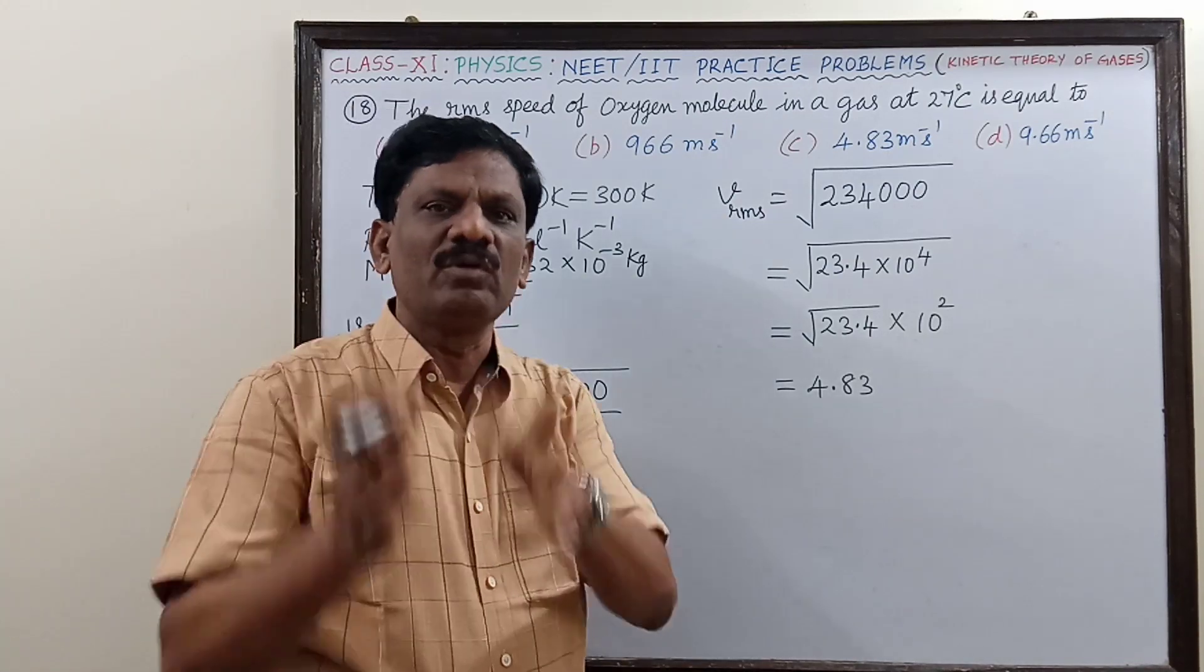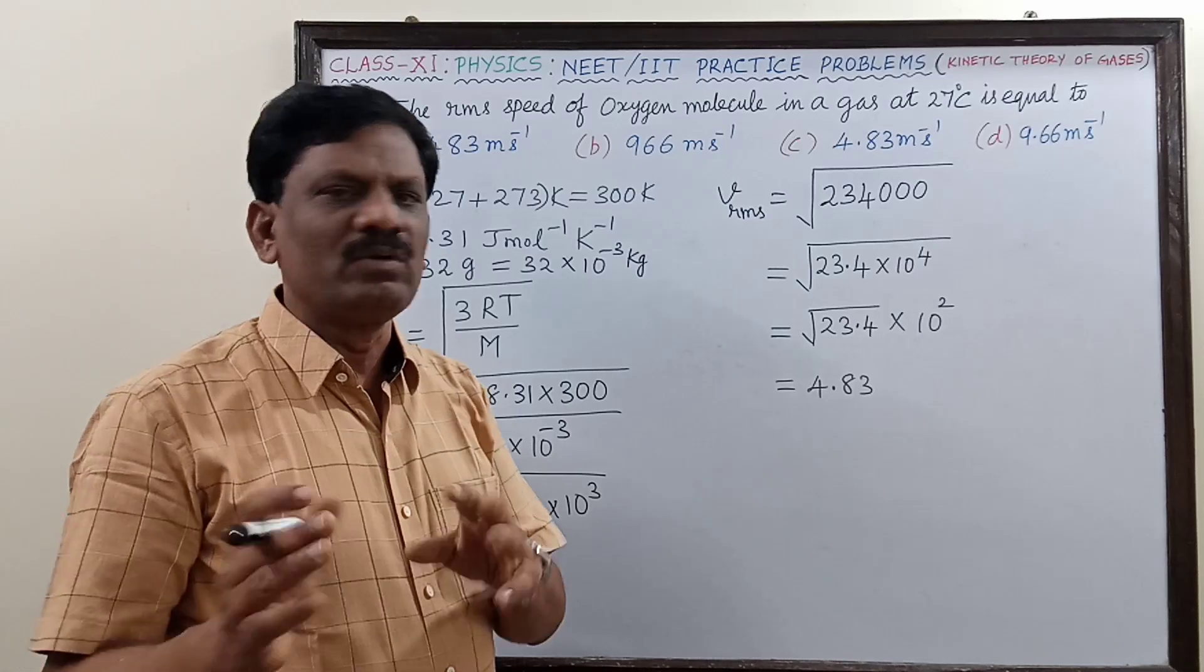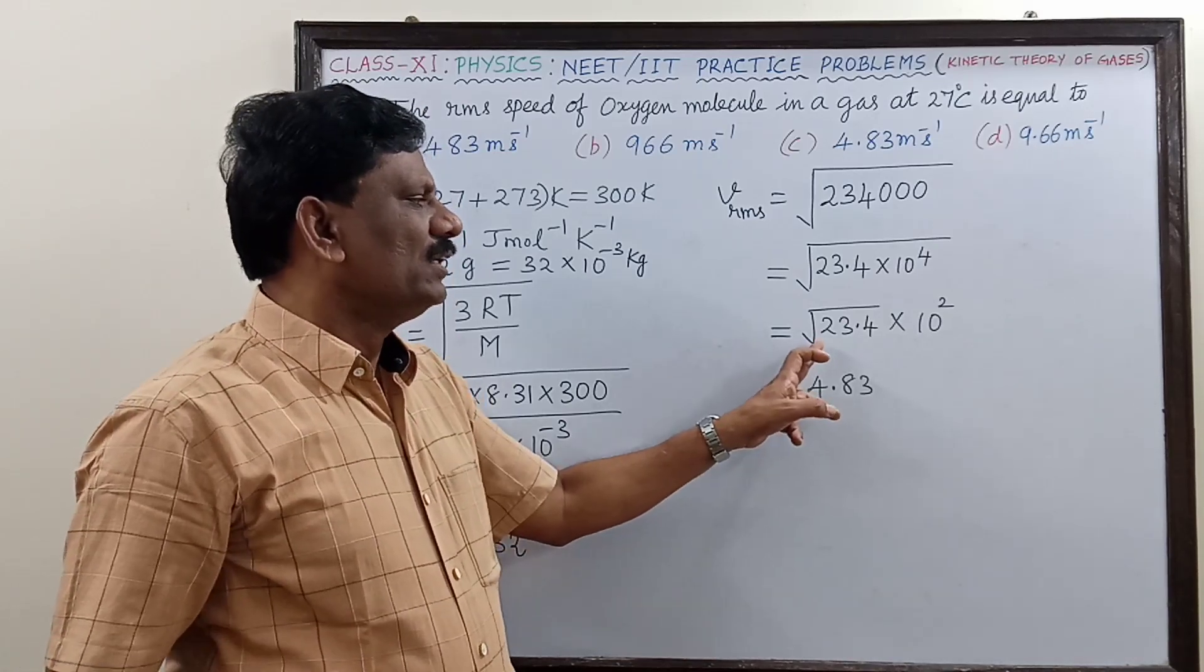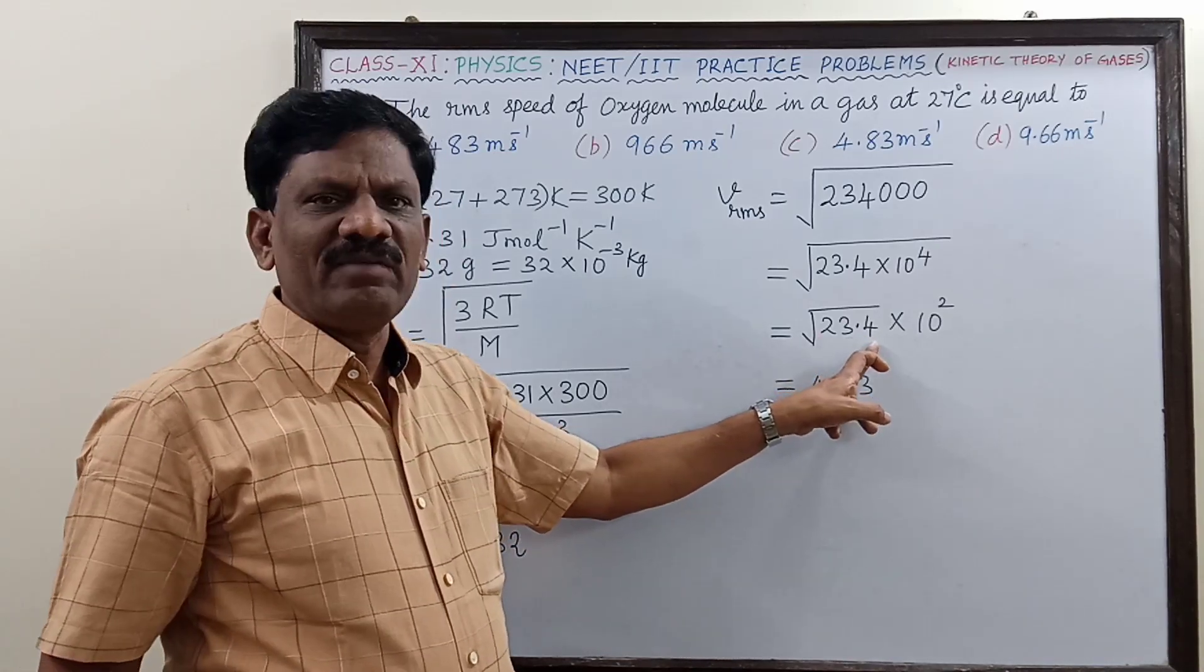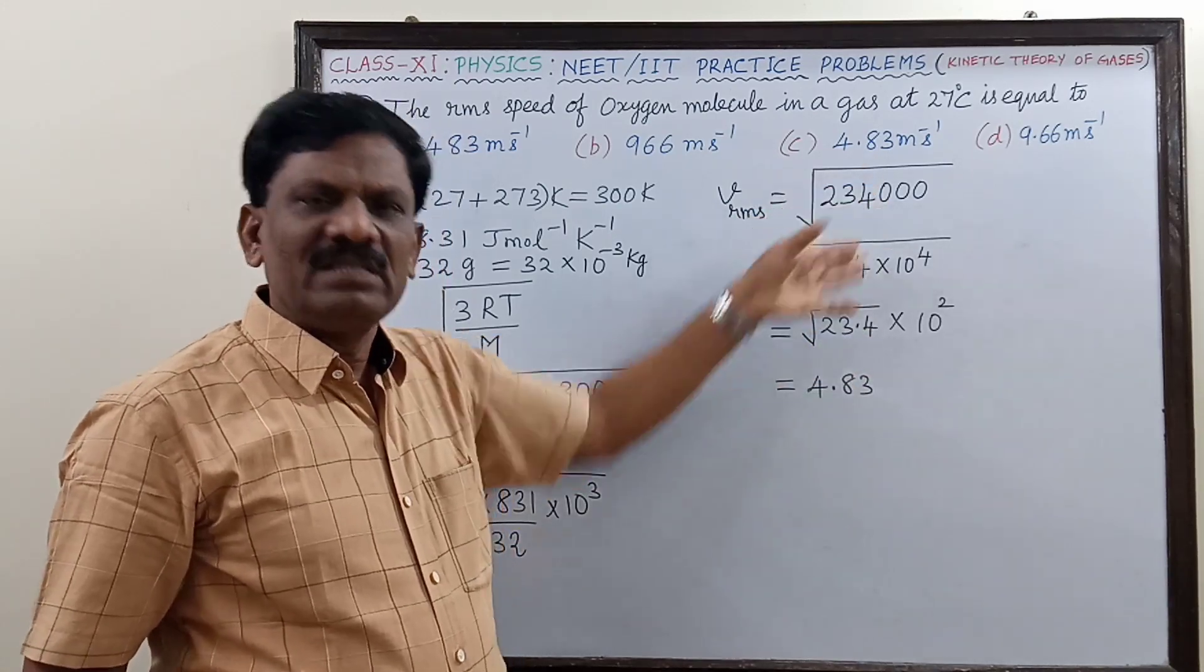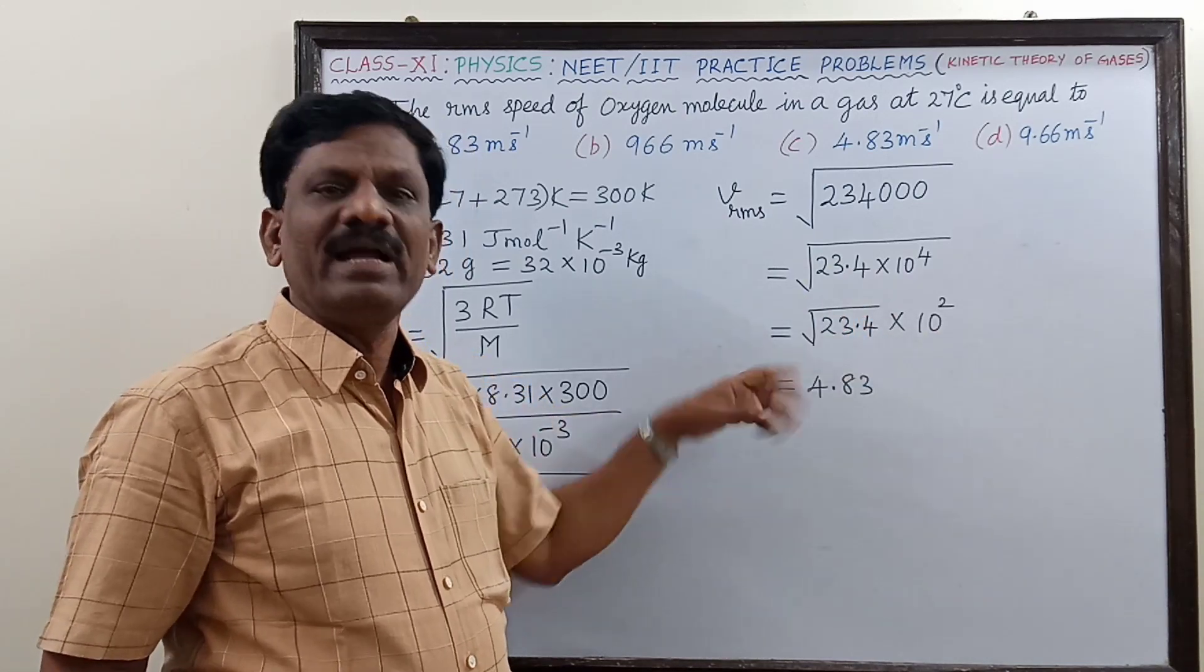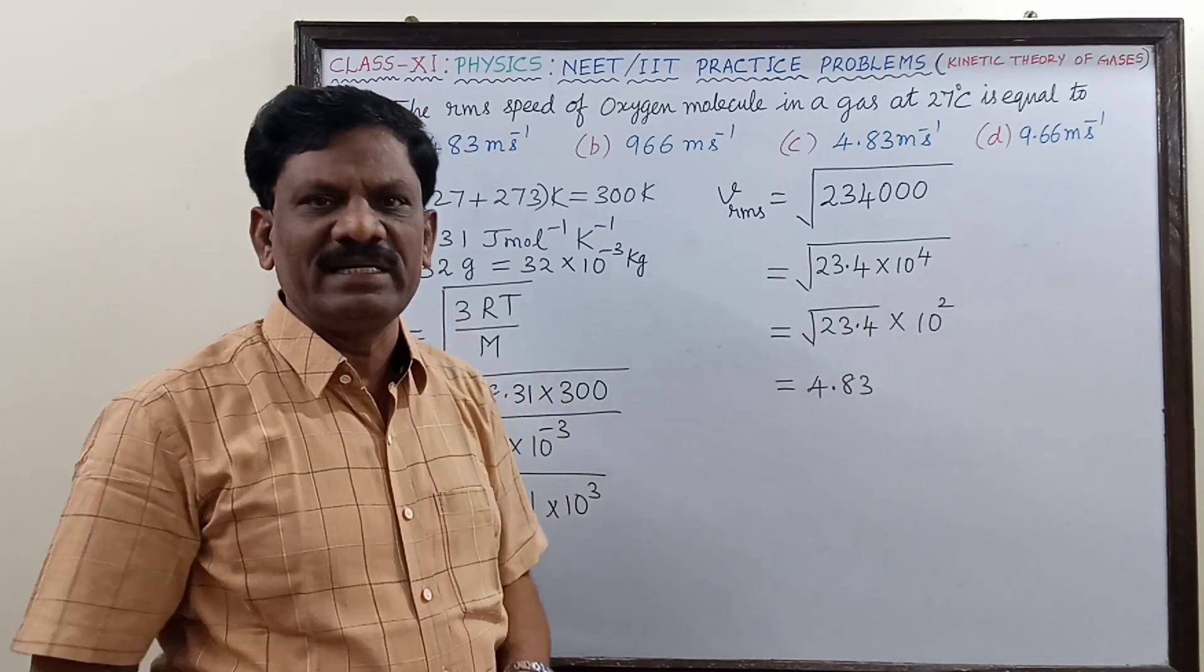See how to find this square root - you will have to practice by using logarithm book. You have to take x equals root of 23.4, then x equals 23.4 whole power half, then log of x equals half into log of 23.4, then x equals antilog of that number. You have to practice that.